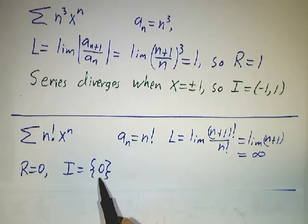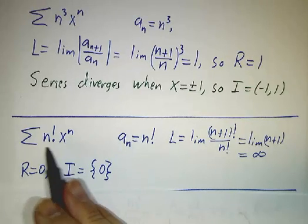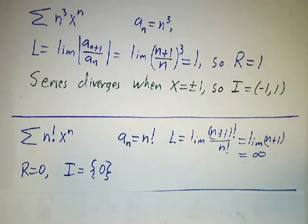The only value of x for which this converges is x equals 0, in which case all the terms but the zeroth term are 0, so of course it converges.